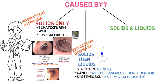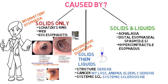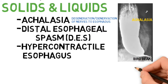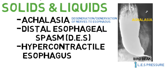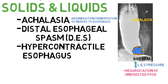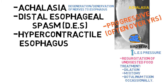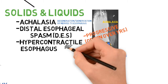The next category, solids and liquids, includes achalasia, distal esophageal spasm (DES), and hypercontractile esophagus. Achalasia is degeneration or denervation of the nerves to the esophagus. It classically has a bird-beak appearance due to increased lower esophageal sphincter pressure. Both solids and liquids get stuck because that narrowing doesn't relax. Patients can regurgitate undigested food. It tends to be progressive over years. Treatment: dilation, myotomy, and occasionally botulinum toxin.